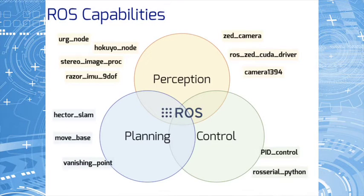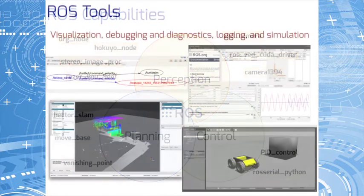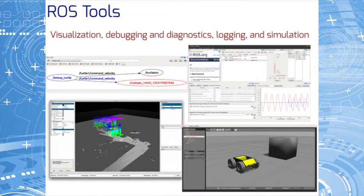We use ROS because it provides several packages for perception, planning, and control, and some of the packages that you will work with in this course are also shown here. In addition to that, we will be using a few ROS tools. These tools help with data visualization, diagnostics, and simulation. They will help us in developing and testing our racing algorithms.